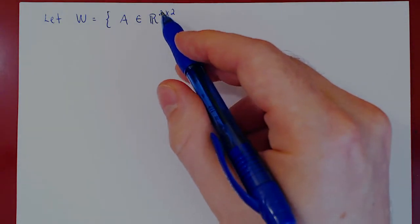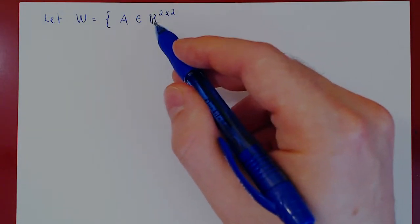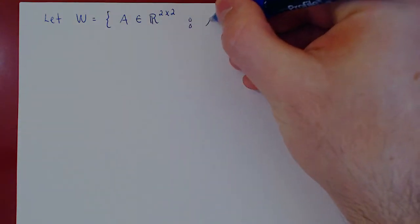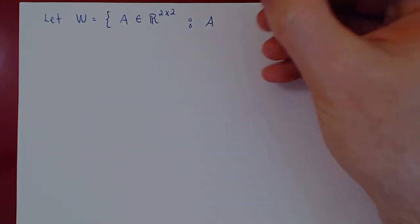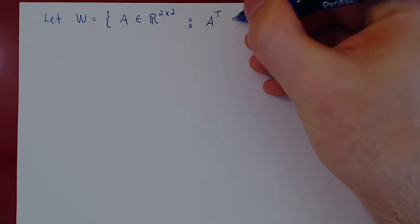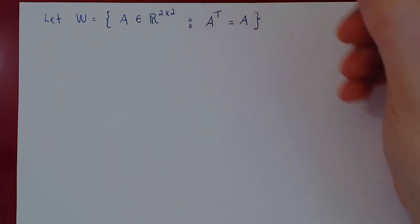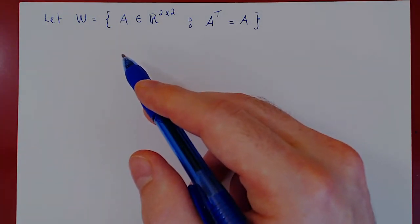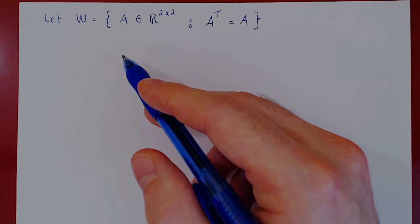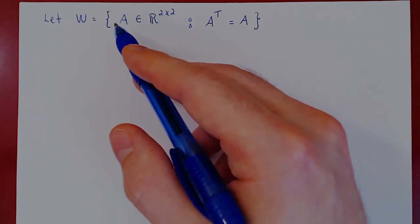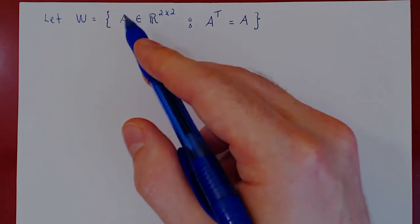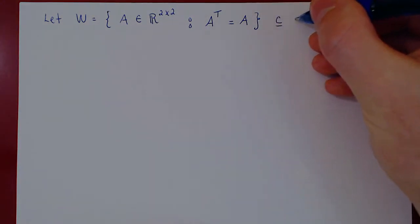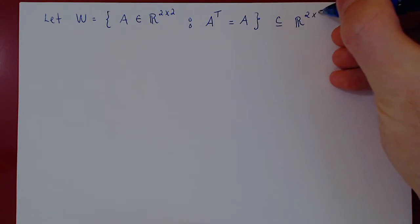R2×2 is the set of 2 by 2 matrices with real entries. But we don't take all of them — we only take the ones that are symmetric, so where A transpose equals itself. This is clearly a subset of the set of all 2 by 2 matrices.